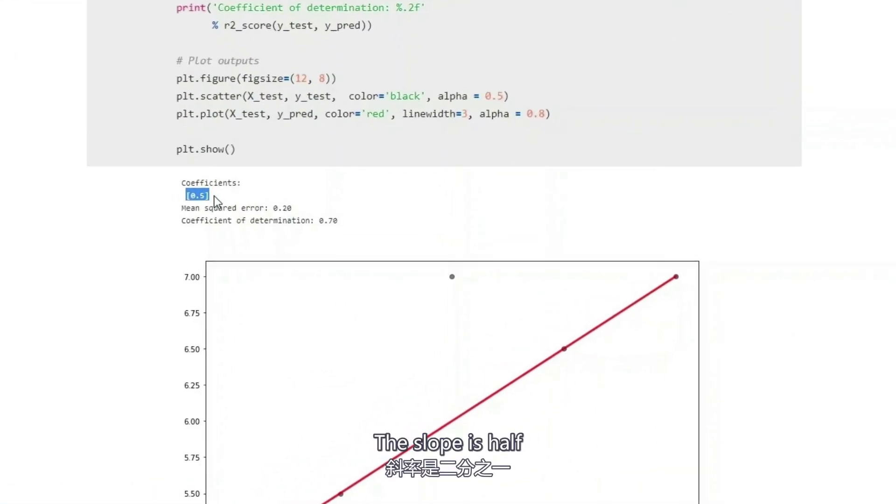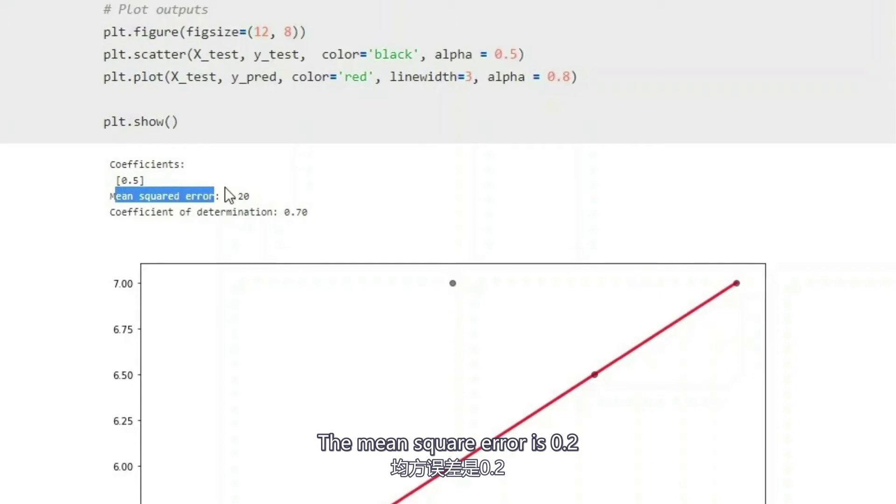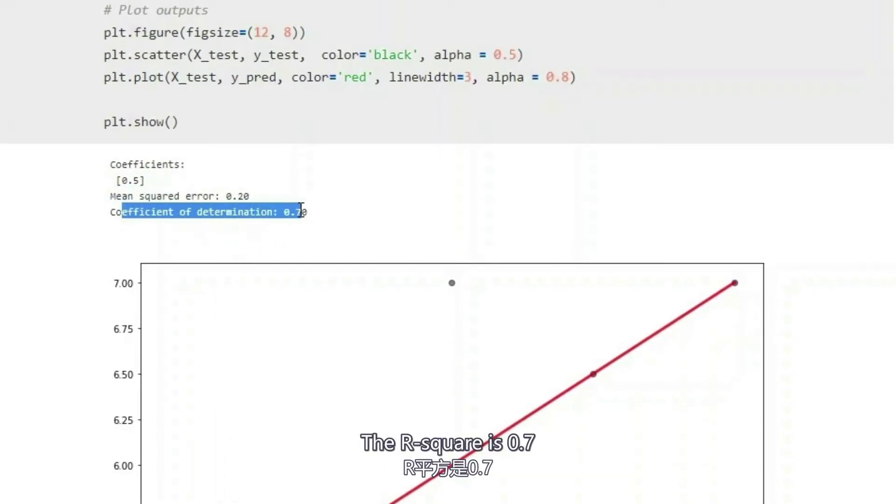The slope is half. The mean square error is 0.2. The r square value is 0.7.